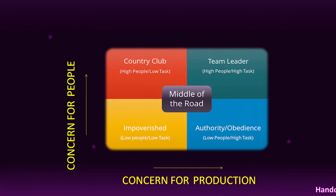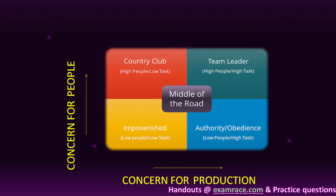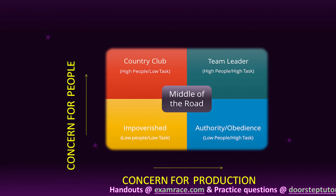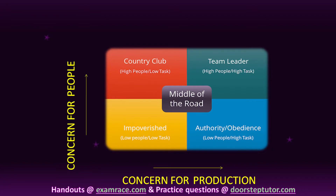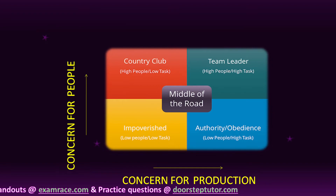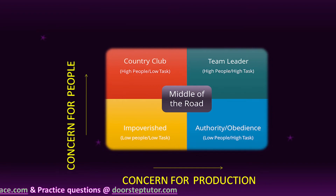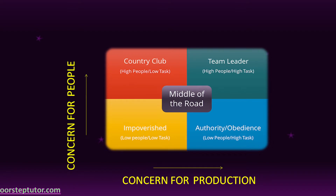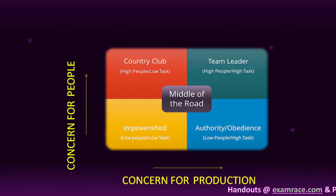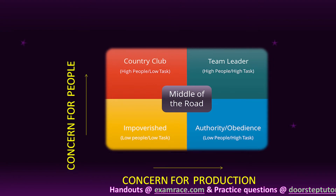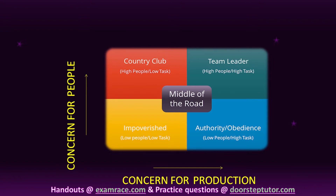Now see this graph. Concern for production lies on the x-axis (horizontal position) and concern for people lies on the y-axis (vertical position). In this graph, numbering from 1 to 9 has been done on the x-axis and also on the y-axis.